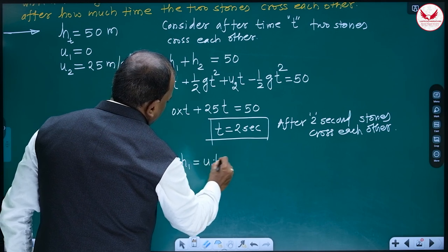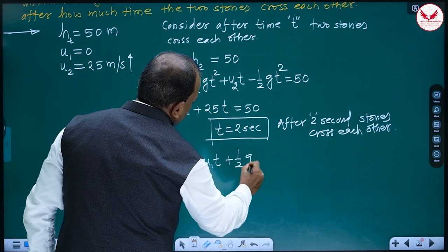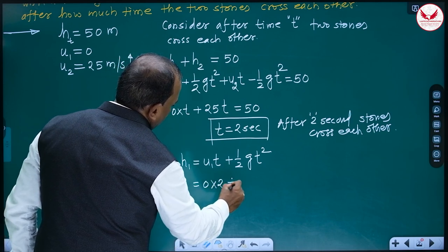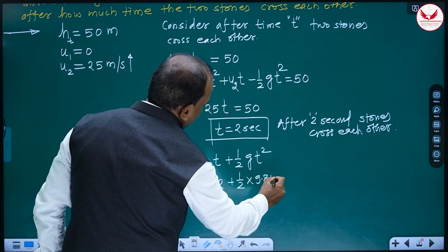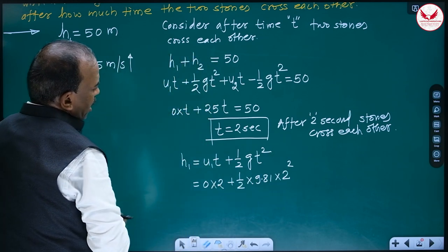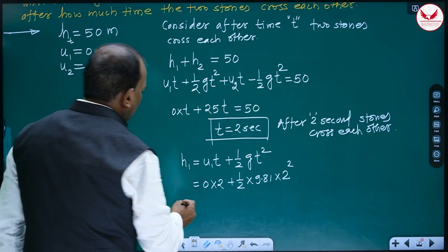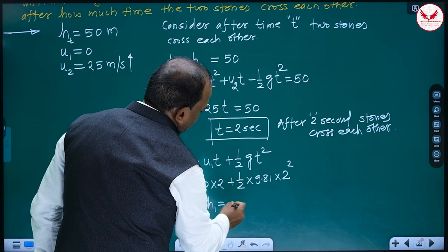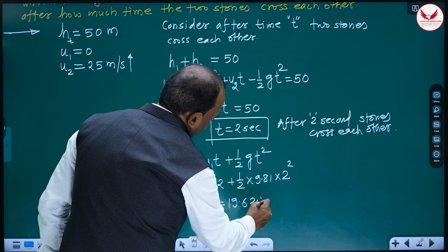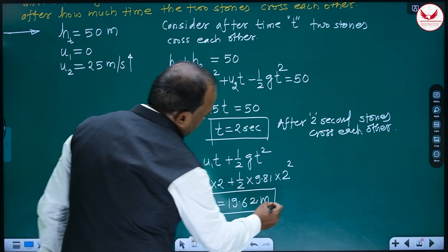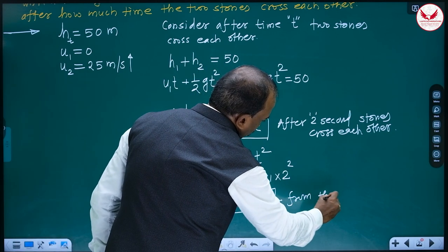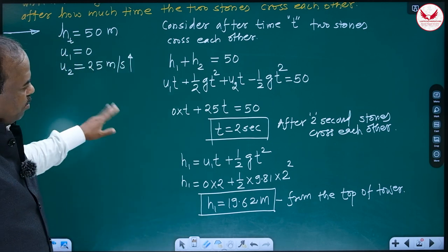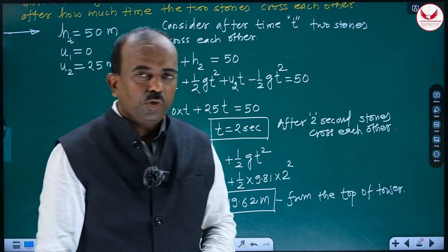h1 = u1·t + ½gt² = 0 × 2 + ½ × 9.81 × 2² = 0 + ½ × 9.81 × 4 = 19.62 meters from the top of the tower. So the two stones cross each other at 19.62 meters from the top, after 2 seconds.